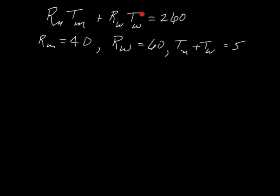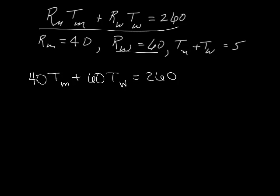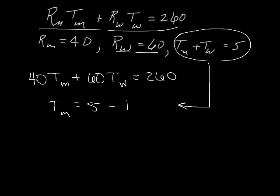Let's take the original problem and substitute. We'll put 40 in for R of M and leave T of M alone, then put 60 for rate of walking, and that equals 260. We know that time on motorcycle plus time walking is 5, so we can set T of M equal to 5 minus T of W. Now whenever we see T of M, we can put this in its place.